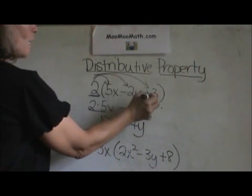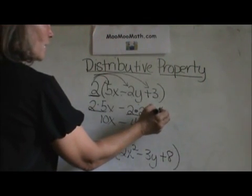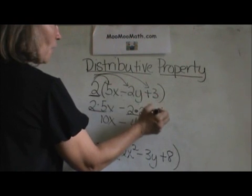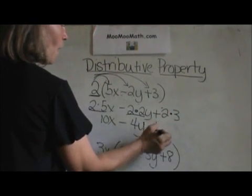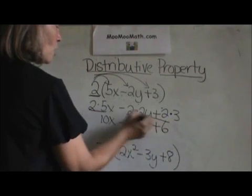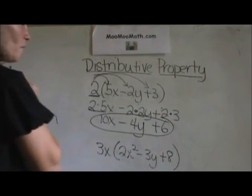Then I take the 2 times the positive 3, which gives me positive 6. So there is the distributive property.